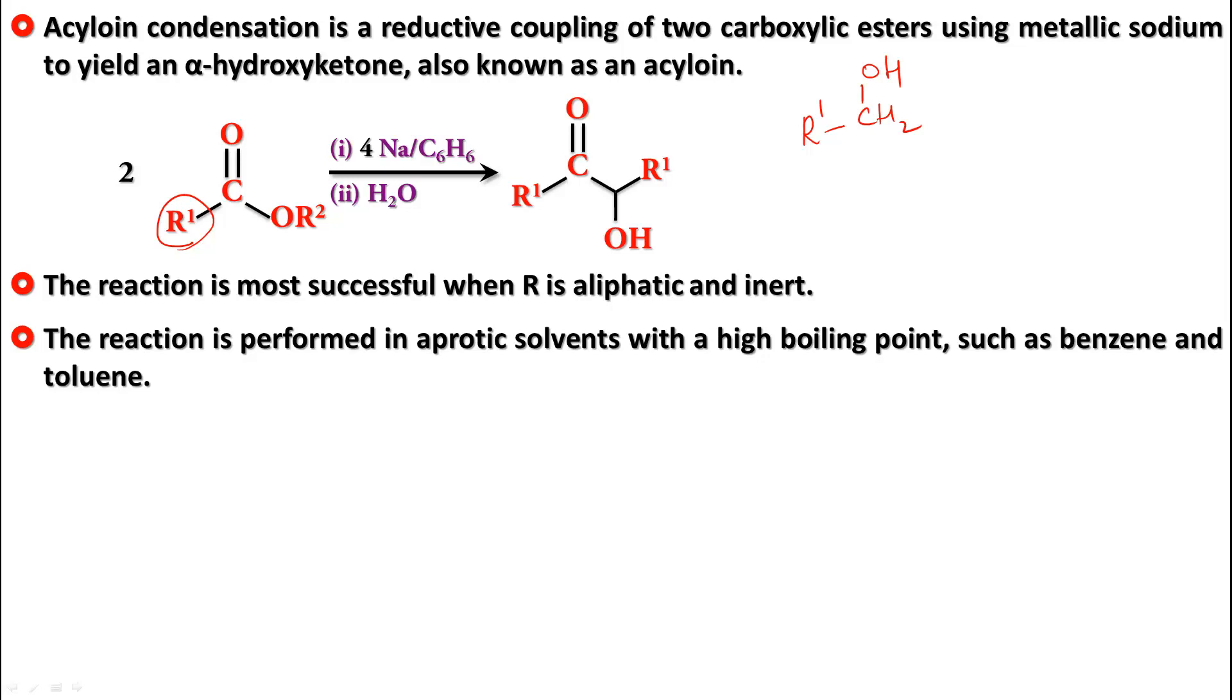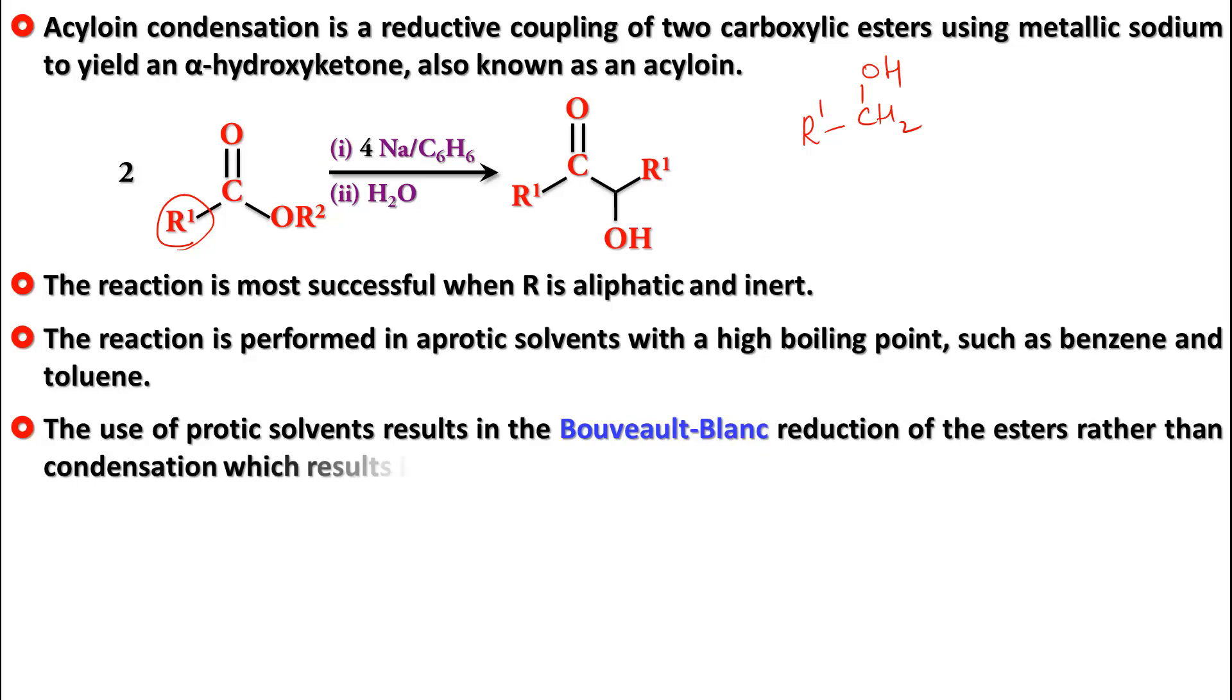So we need an aprotic solvent and high boiling because this reaction requires a lot of heat and we don't want the solvent to go away while heating. So we need a high boiling solvent. If a polar solvent and a protic solvent is used, then we have the reduction of esters to alcohol which is called the Bouveault-Blanc reduction which we will talk about in a separate video.